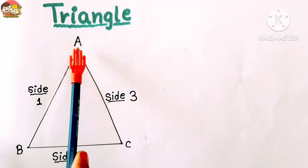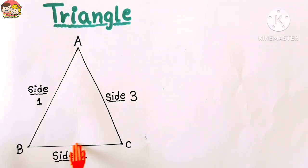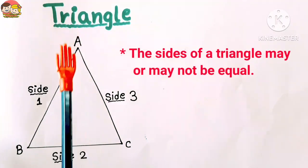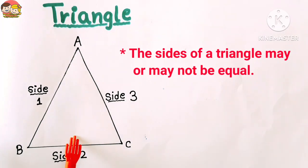Now, its sides are AB, BC, and CA. The sides of a triangle may or may not be equal.